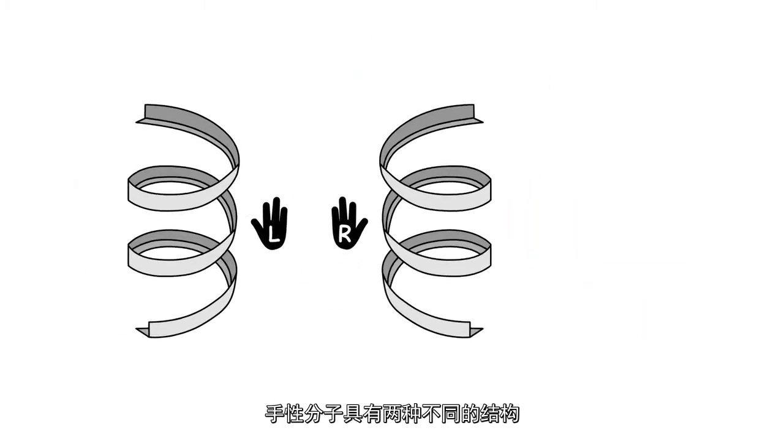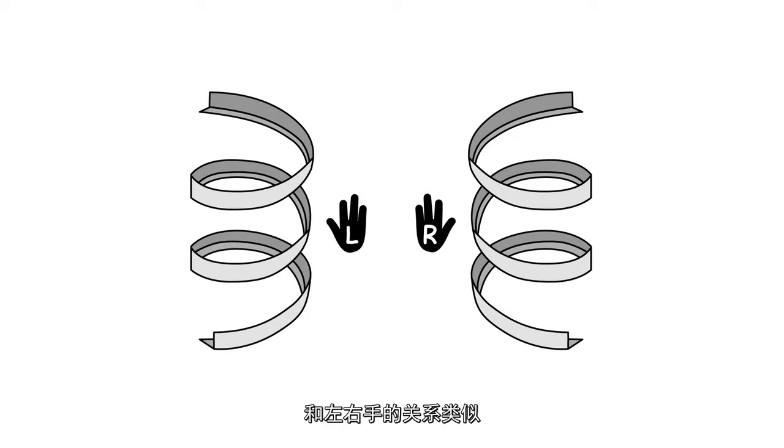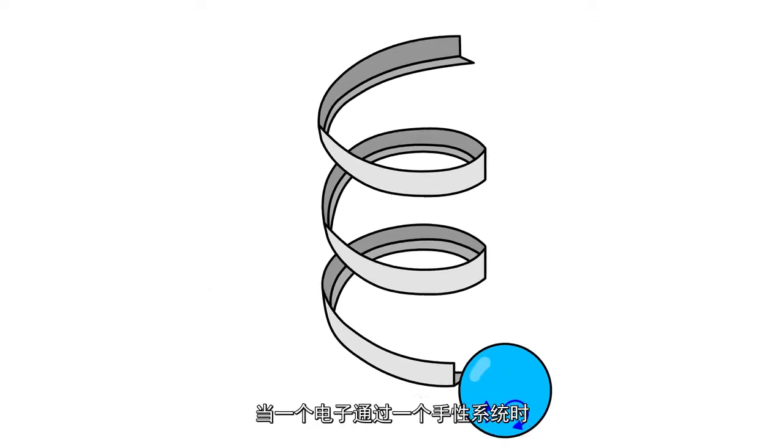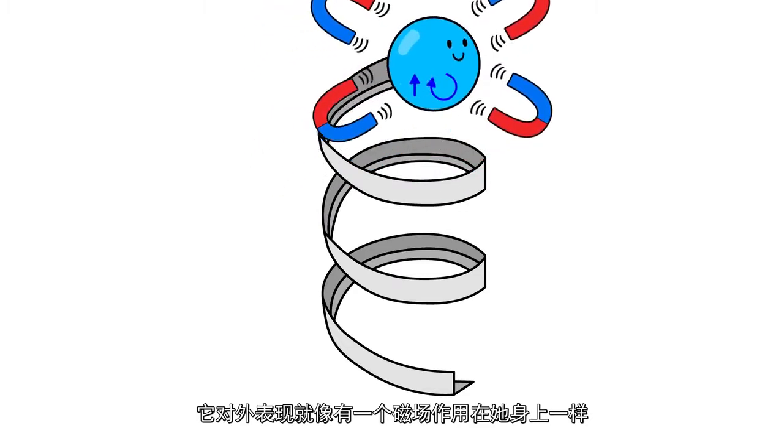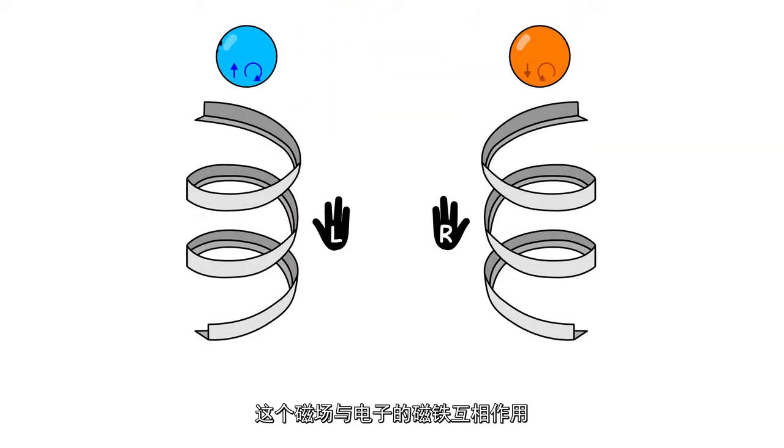Chiral molecules have two different symmetries, similar to right or left-handedness, which are called enantiomers. When electrons are moving through chiral systems, they behave as if there is a magnetic field acting on them. This magnetic field interacts with the magnetic dipole of the electron, namely with the spin of the electron.